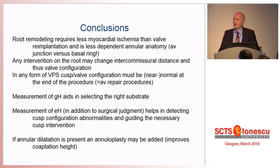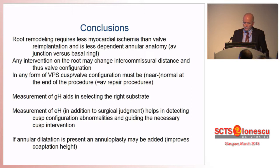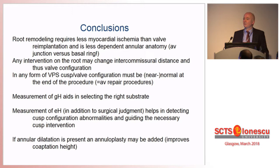The measurement of geometric height is very simple and helps you select the right substrate — as in rheumatic mitral disease where the substrate may be suboptimal, and operating on a poor substrate makes the operation more complex. The measurement of effective height, in addition to surgical judgment, helps detect cusp configuration abnormalities and guide the intervention. If annular dilatation is present, an annuloplasty may be added.